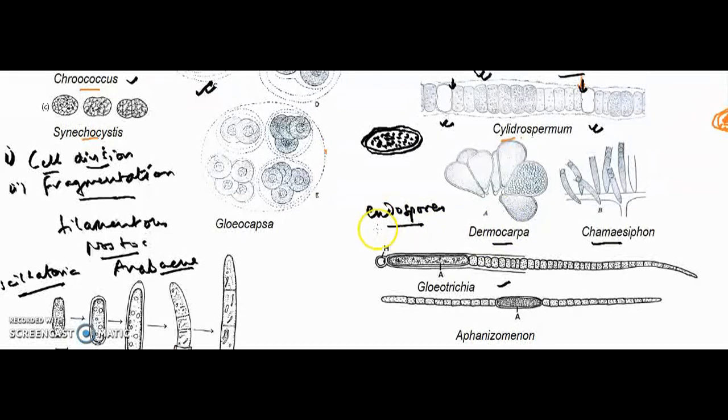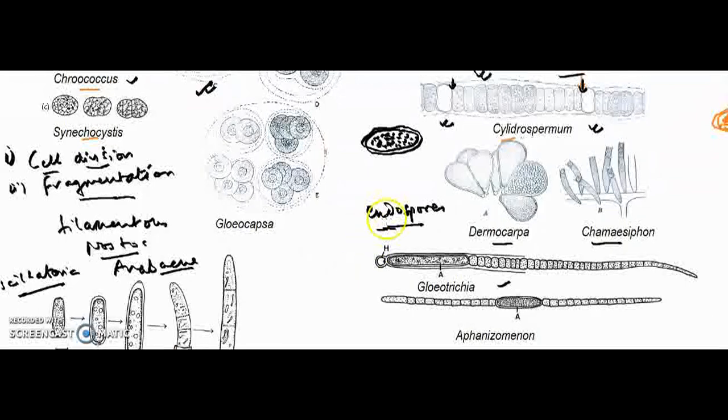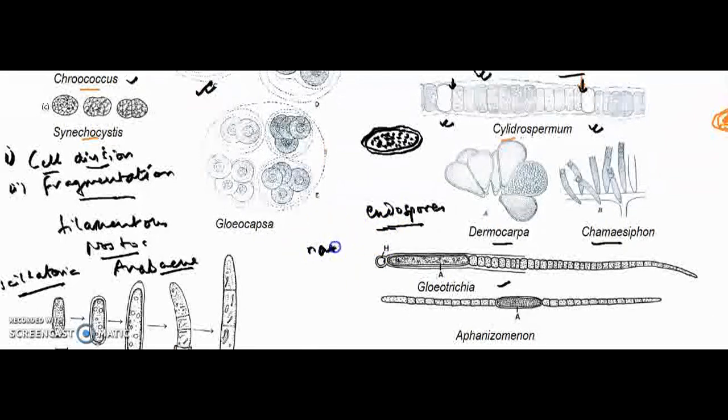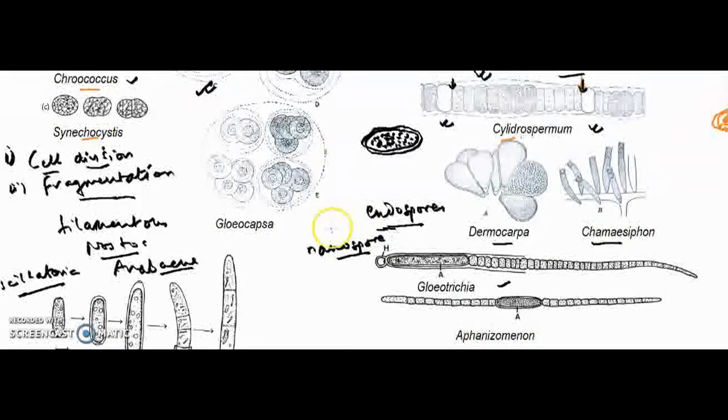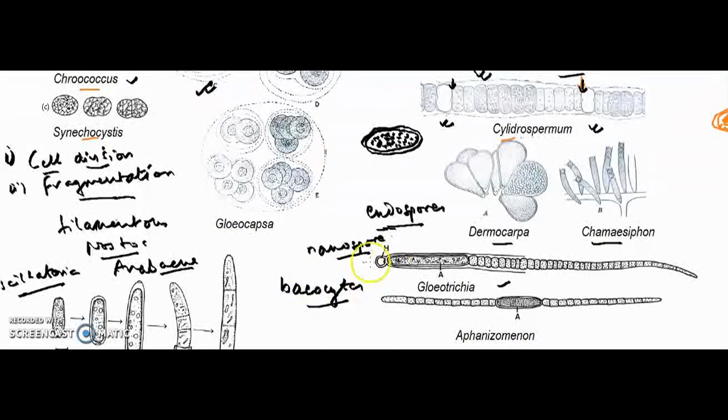If cell division continues further, the size of the endospore becomes very small, and in that case it is called a nanospore. These endospores and nanospores have also been termed baeocytes. Baeocytes are nothing but these endospores. This is characteristic of Dermocarpa or Dermocarpella.